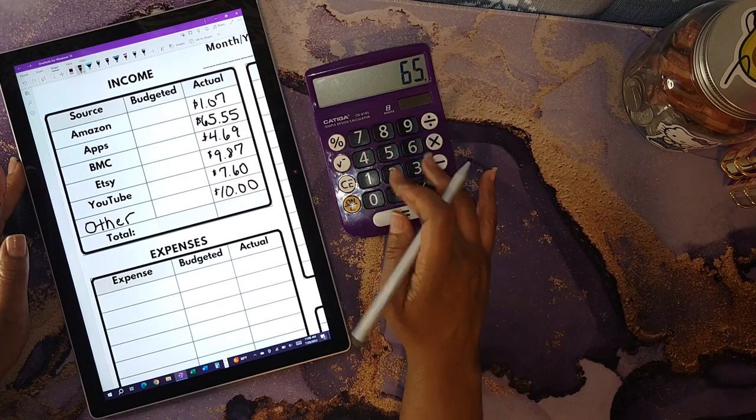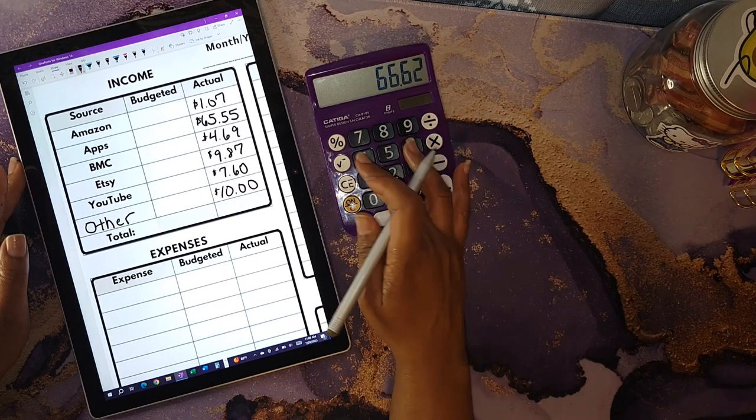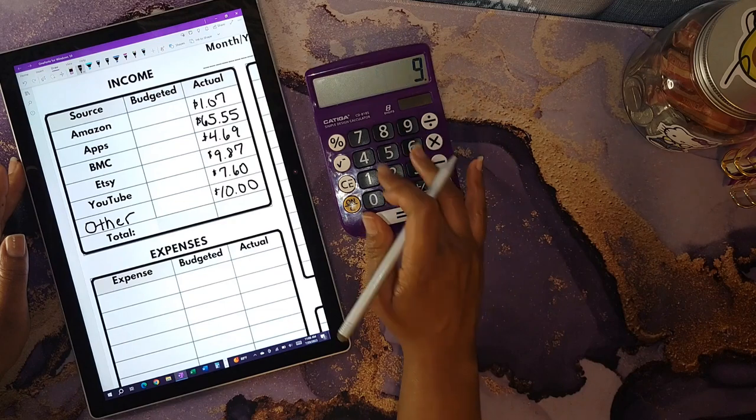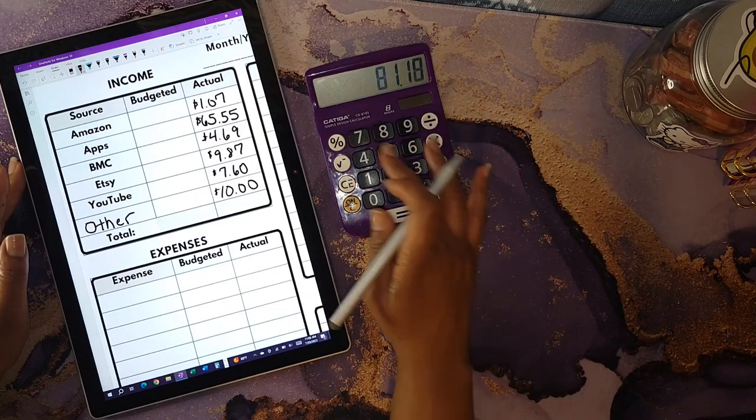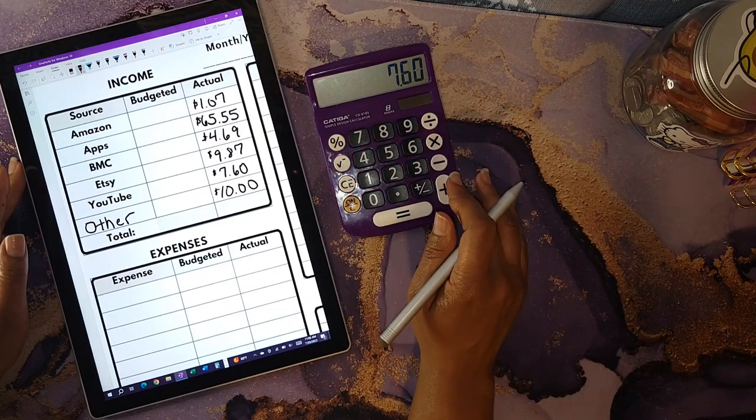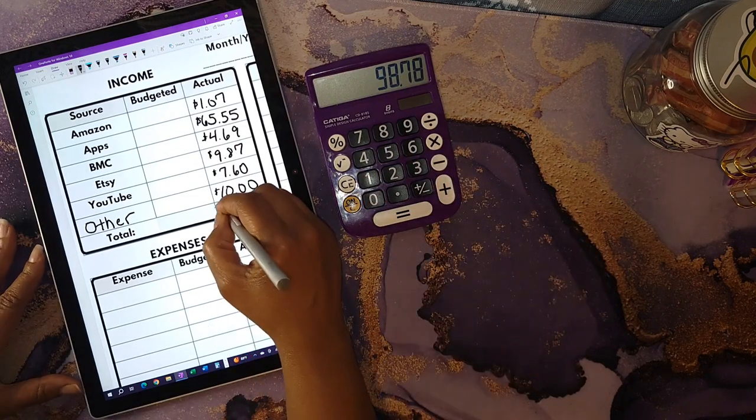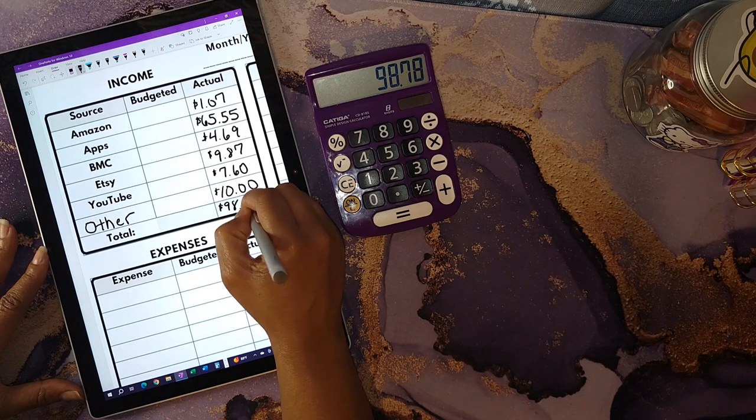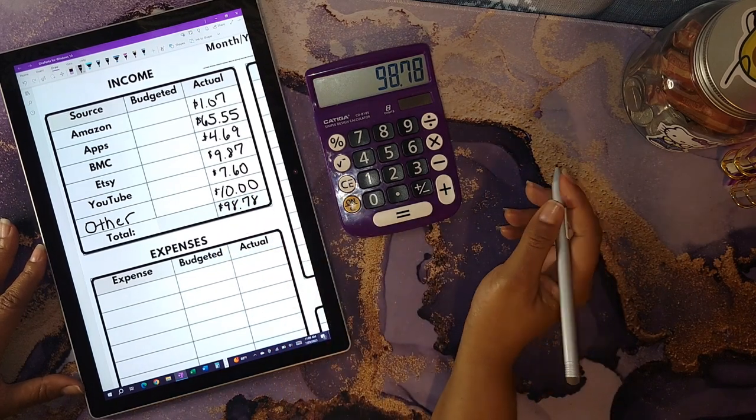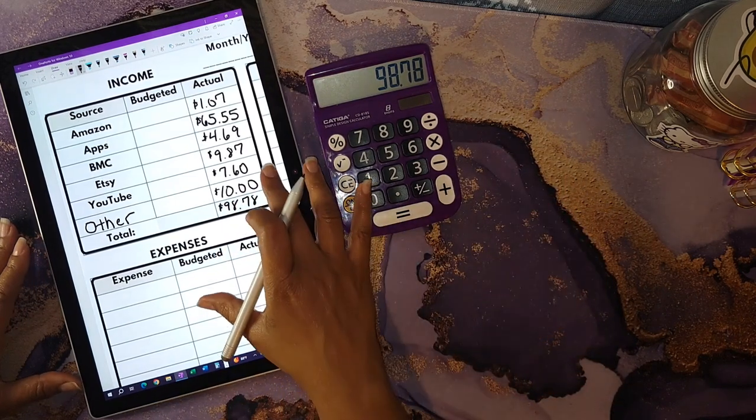$1.07 plus $65.55 plus $4.69 plus $9.87 plus $7.60 plus $10 equals a total of $98.78 that I will be allocating today within this video.